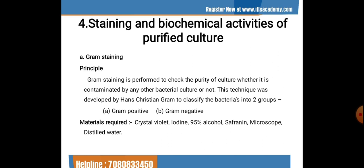Next is staining and biochemical activities of the purified culture. For gram staining, we check whether the bacteria are gram positive or gram negative. Gram staining is also performed to check the purity of the culture for contamination by other bacteria. This technique was developed by Hans Christian Gram to classify bacteria into two groups. Materials required include crystal violet solution, iodine solution, 95% alcohol solution, safranin, a microscope, and distilled water.